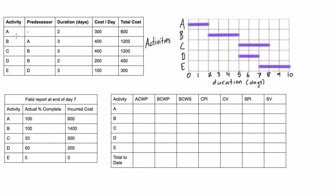This is what we would expect to happen based on our plan from our original table of dependencies. We've received a field report at the end of day seven from our field manager. We'll find day seven here and put a line in — this is our field report date. The field report says activity A is 100% complete by end of day seven, which is good since we expected it finished on day two.